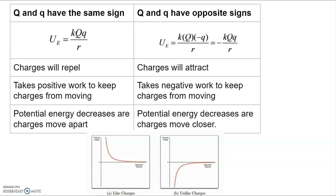To summarize things in terms of sign: if the charges have the same sign, the charges will repel, and it takes positive work to keep the charges from moving, because the charges want to displace away from each other. Potential energy therefore decreases if the charges move apart, since we define zero to be at infinity for electric potential energy. If we have one positive and one negative charge, these charges will attract, and it takes negative work to keep them from moving. Potential energy decreases as they move closer together, because the charges want to be together.